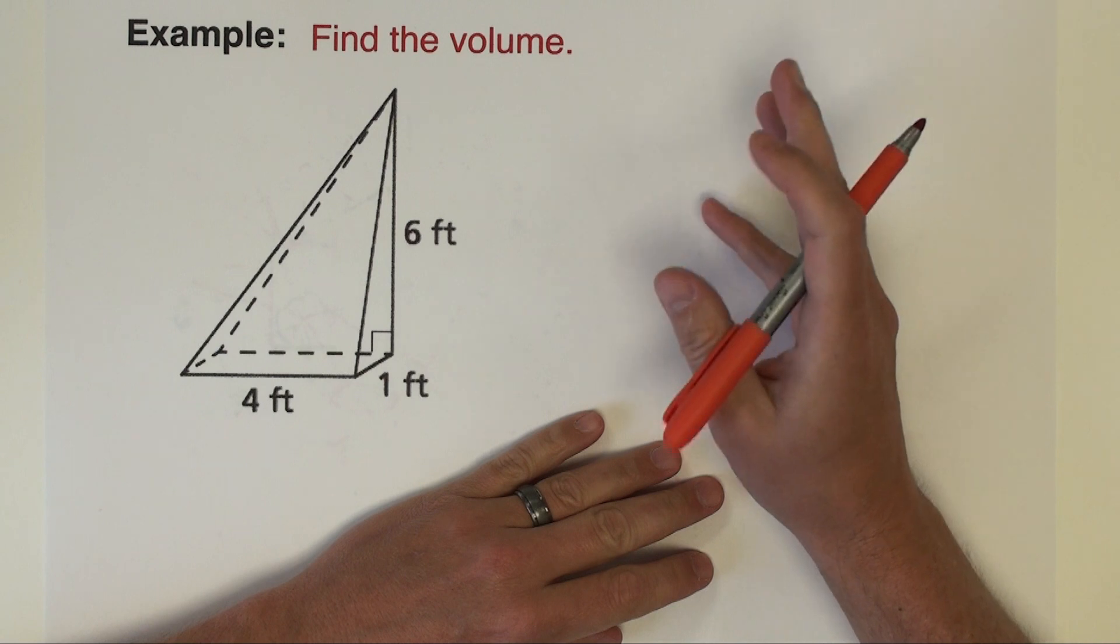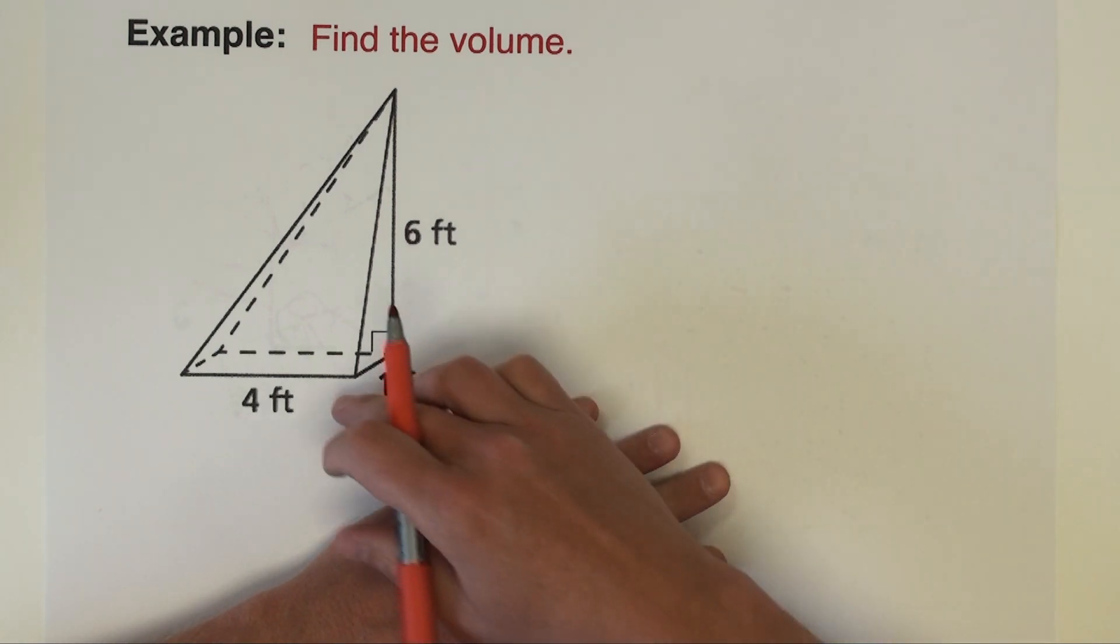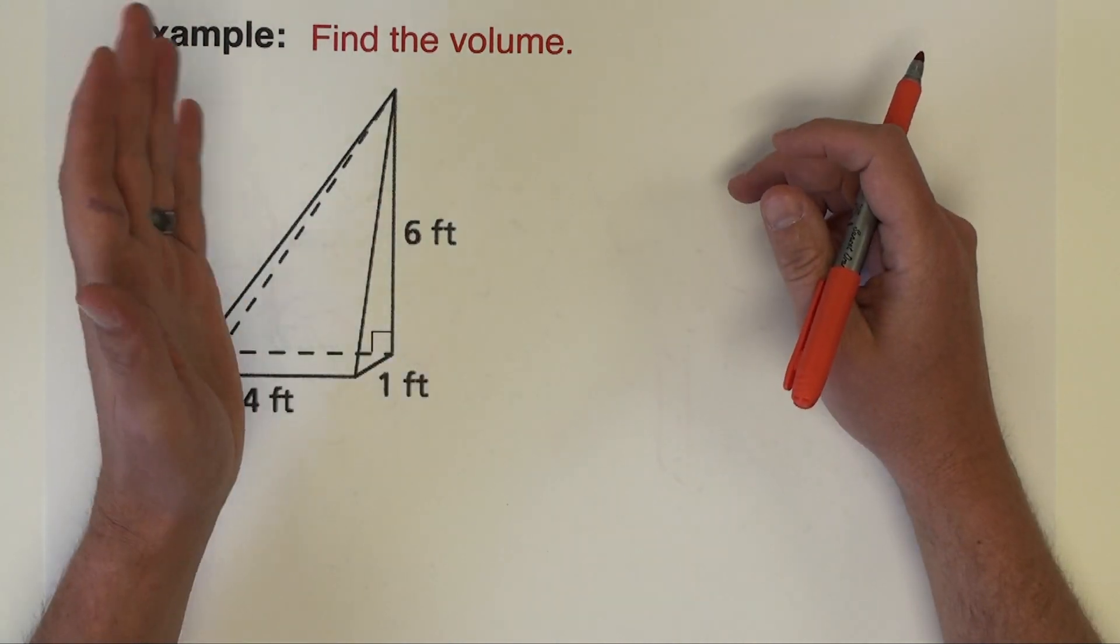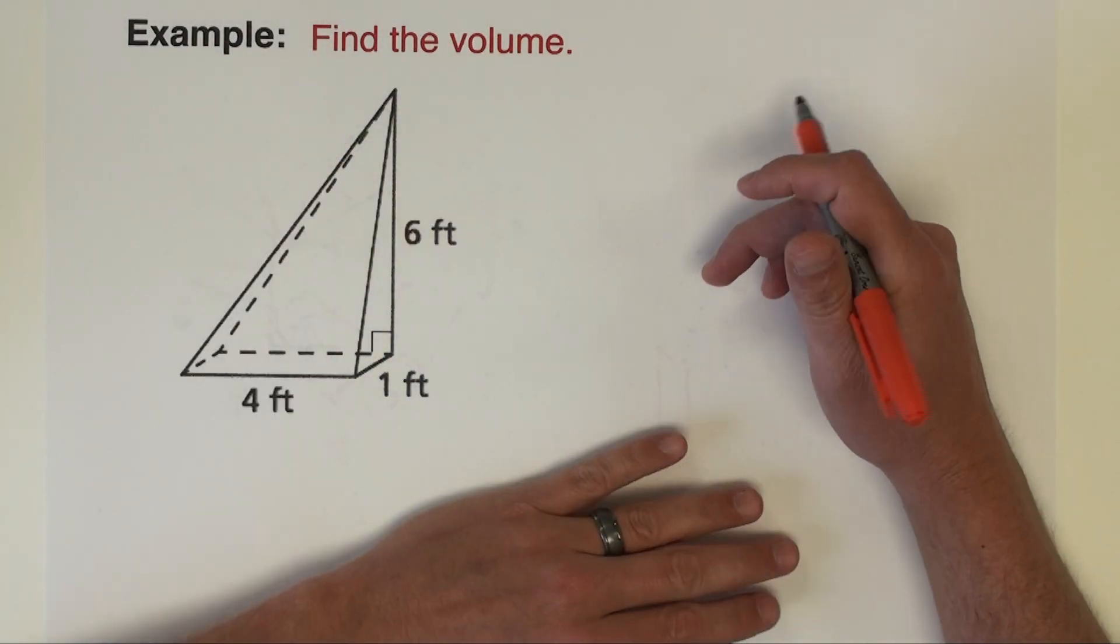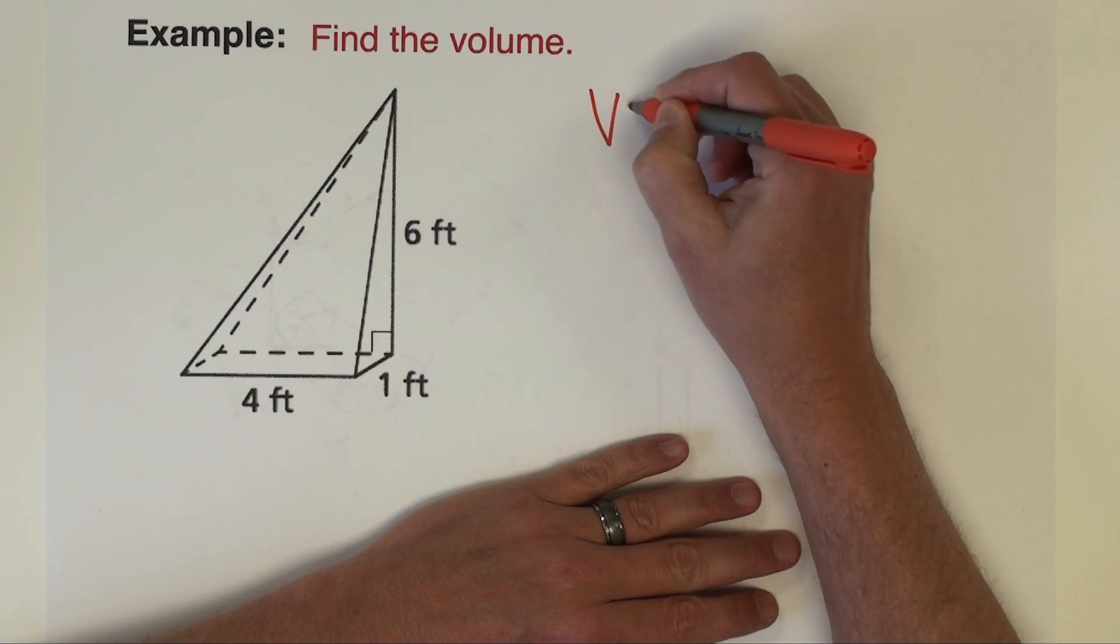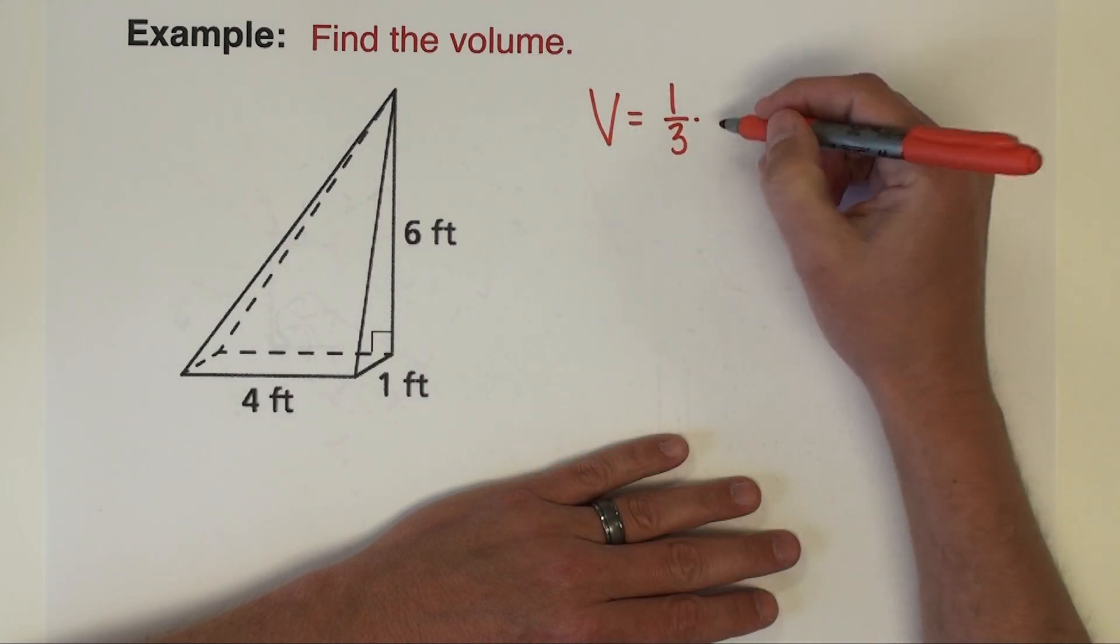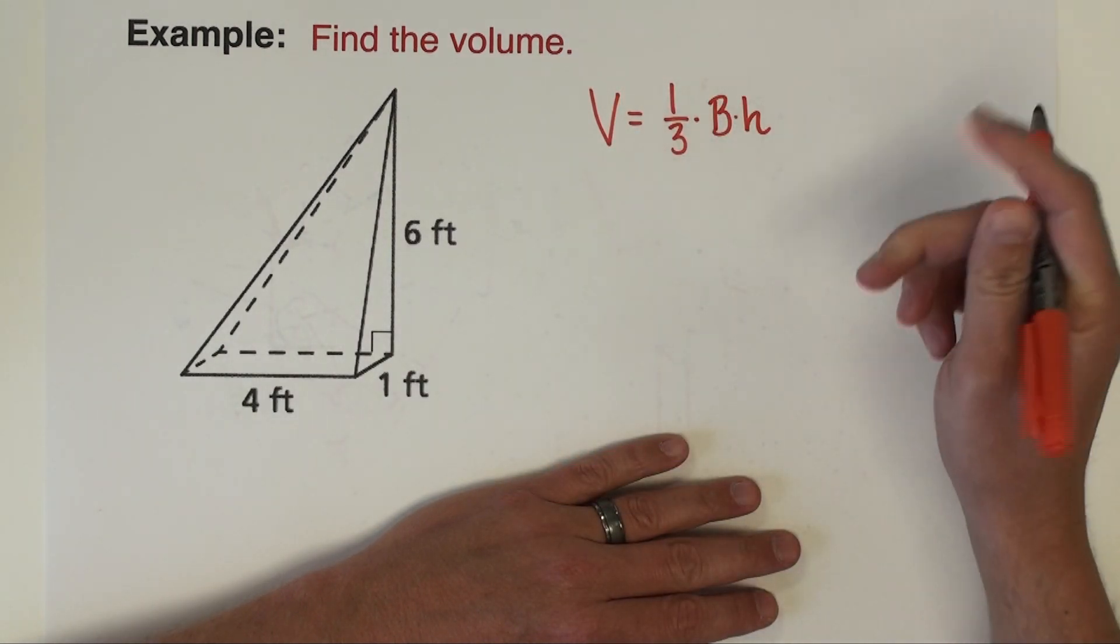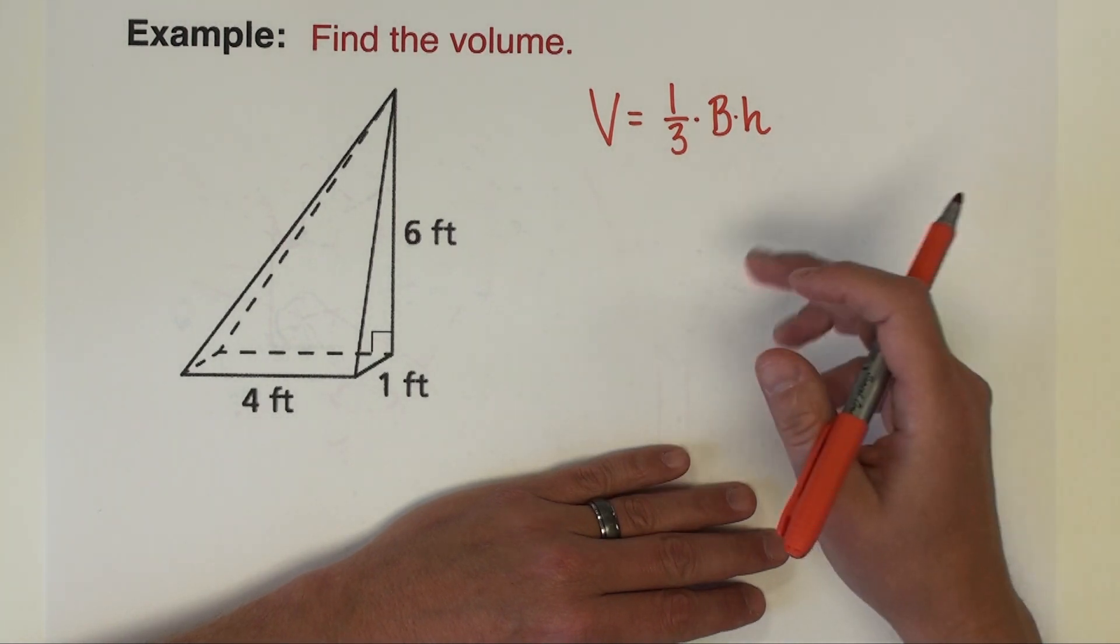Okay, the final pyramid example that I have looks a little bit different. First off, the base is a rectangle, but this pyramid you can see is kind of leaning a little bit. I just wanted to do an example like this to reiterate that the fact that it's leaning doesn't change how we do it or the formula that we use. It's still going to be exactly the same.